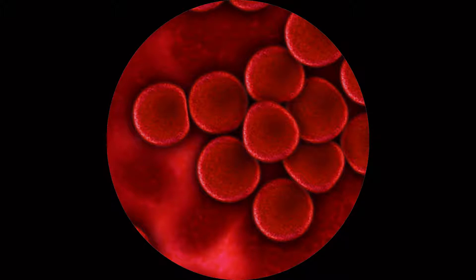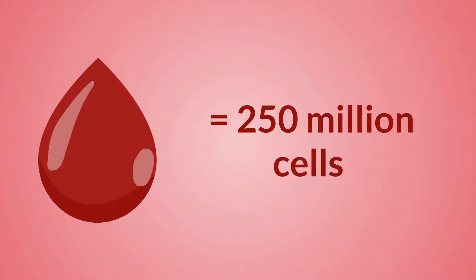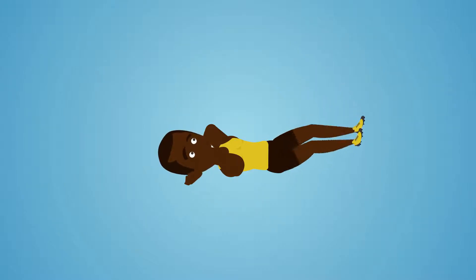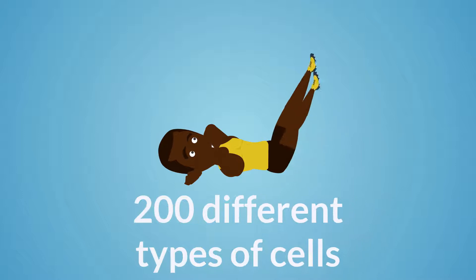These are red blood cells seen under a microscope, one of the smallest types of cell in our body. One single drop of blood contains up to 250 million cells.